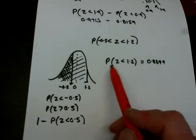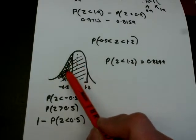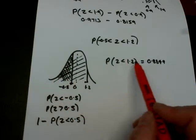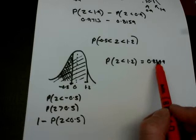The first part of the problem is to say that the lines, the diagonal lines sloping down to the left, represent all the way to here, represent the probability of the line below 1.2. If we look that up, it's 0.8849.